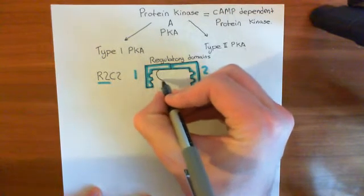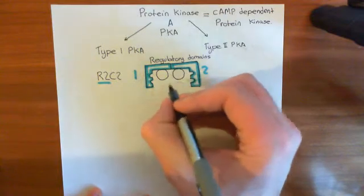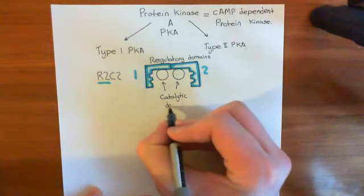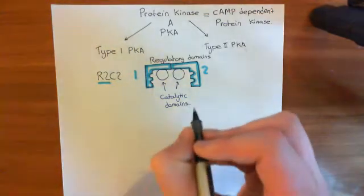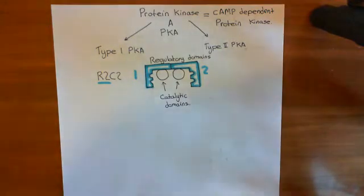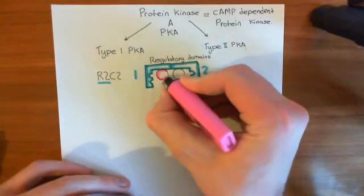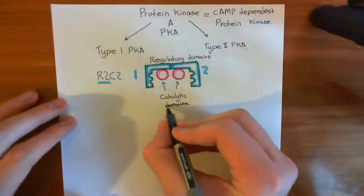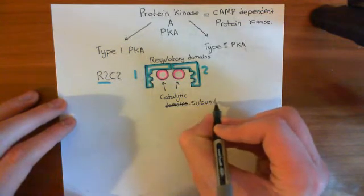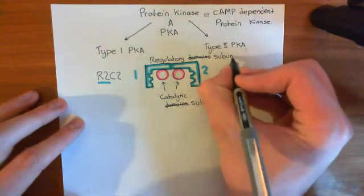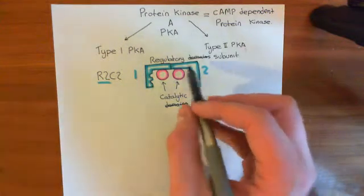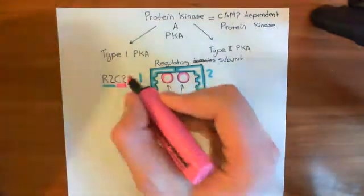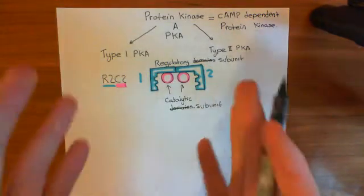These regulatory subunits also hold on to two catalytic subunits — these are the portions which actually perform the enzymatic action, which actually add phosphate groups onto proteins. So there are four separate proteins here all involved in this R2C2 complex, which is why it's called the R2C2 complex: you've got two regulatory subunits and two catalytic subunits forming this tetramer.